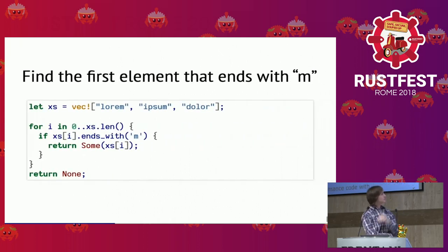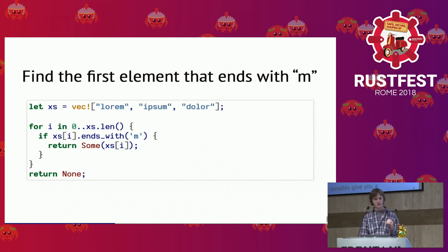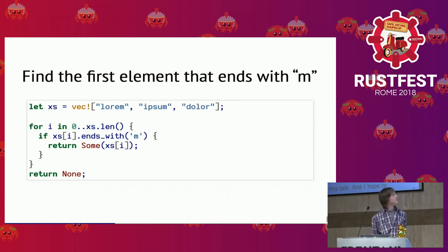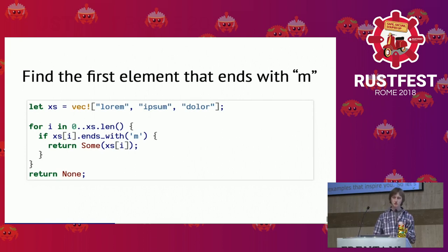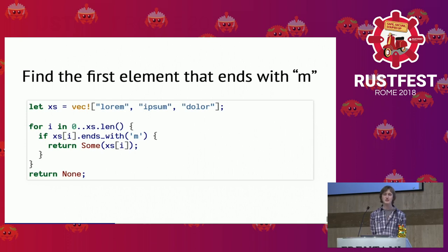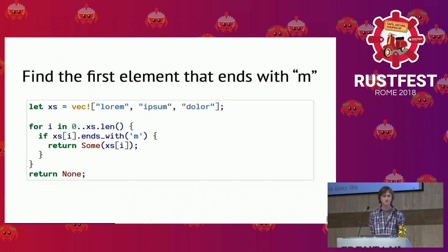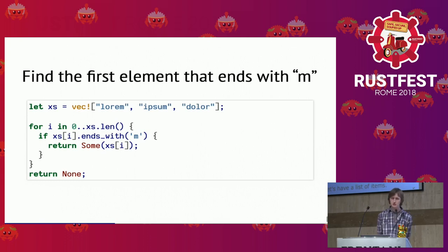Let's have a list of items — I'm going with Latin here because we are in Rome. The idea is to find the first element that ends with the character M. We loop over our vector from the zeroth item up to the last item, defined by the length of the vector. If the item happens to end with an M, we return Some with the content of the element; otherwise, return None.